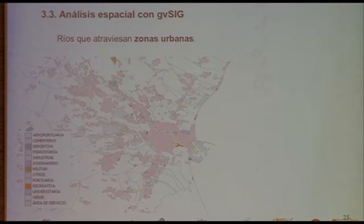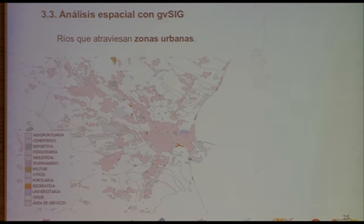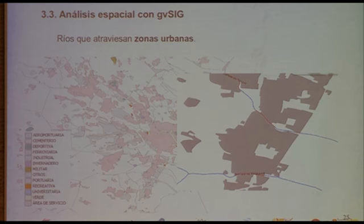Another analysis: rivers going through urban areas. Urban areas were considered to be most of the areas in our system, whether military or airport, plus scattered population areas. All polygons were merged into each other for us to have homogeneous shapes, and then the river layer was applied. You can see in red the stretches of river that actually go through urban areas.